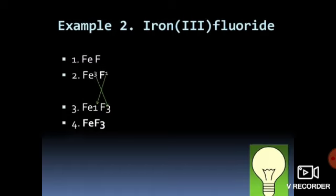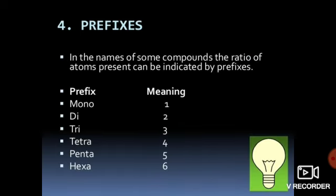For iron(III) fluoride: iron is given with Roman numeral III, so its valency is 3. Fluorine has atomic number 9, configuration 2, 7 — it gains one electron, so its valency is −1. Cross-multiplying iron's valency of 3 with fluorine's valency of 1 gives FeF3. The 3 from iron goes to fluorine as a subscript, giving the formula FeF3.